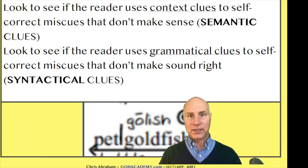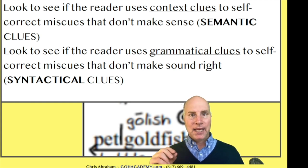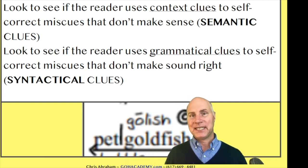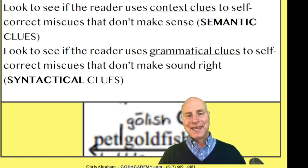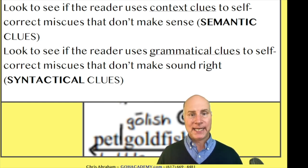Those are surrounding words that help us make sense of a miscue. I'll say it again: a context clue, or more specifically, a semantic context clue. These are surrounding words that help us self-correct a miscue that doesn't make any sense.